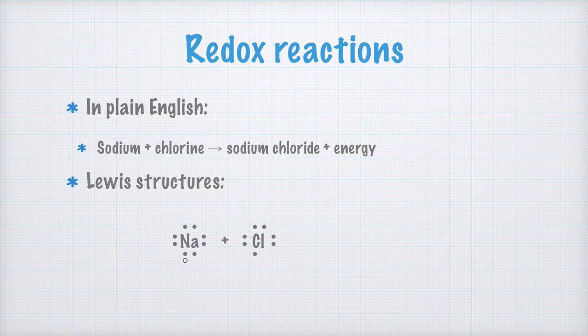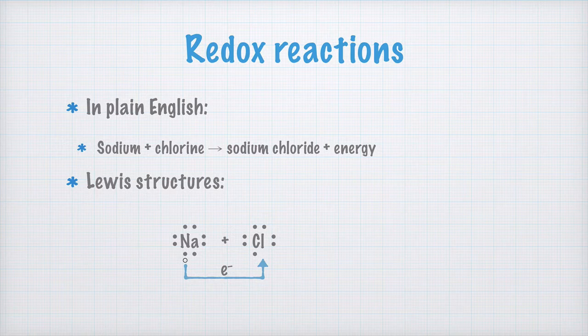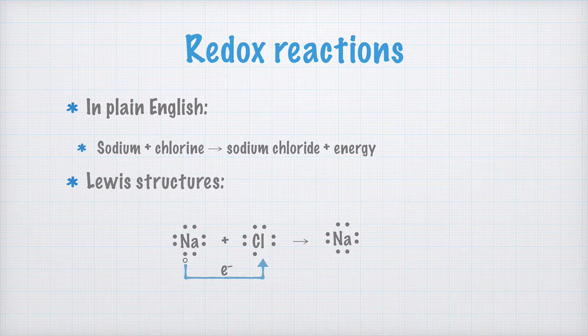In the reaction between sodium and chlorine, the sodium atom is oxidized — that is, it releases its only valence electron. The electron is taken up by the chlorine atom, which means it is reduced. We get a sodium ion, which now has 8 electrons in its outermost shell, making it extra stable. Since it has lost a negative charge, it has a charge of +1, written with a small plus sign.